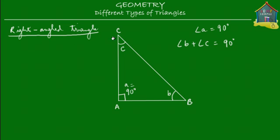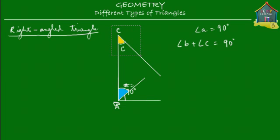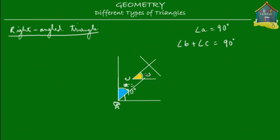Let's show that. Let's put some color into these angles, and I'll show you that the sum of these angles is equal to angle A. We cut this over here, paste it, rotate it, and fit it here. Then we cut angle C, paste it, rotate it, and place it here. And there you go — the two of them together make this angle which is 90 degrees. So in a right angle triangle, one of the angles is 90 degrees and the sum of the other two angles is also 90 degrees.